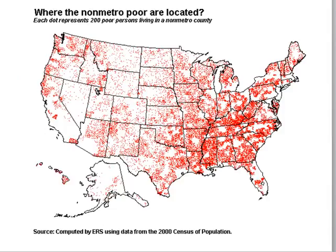This is a dot map — a thematic map showing where poor people live who are not in a metro area. Each dot represents 200 people. You tend to have more poverty in metro areas, so this map looks at different spatial patterns in non-metro poverty. When looking at spatial patterns, we consider whether they are clustered, linear, or dispersed — trying to describe how dense or spread out the population is.